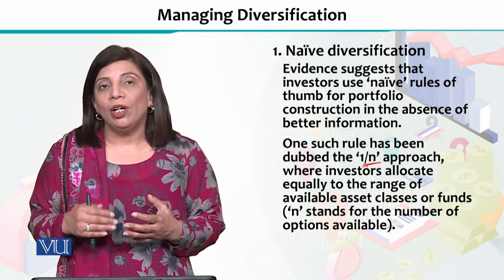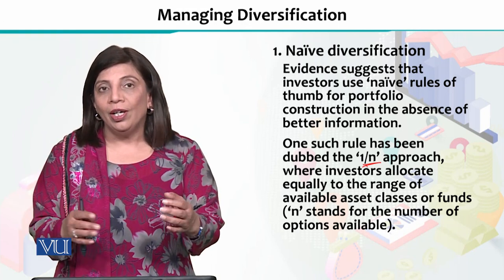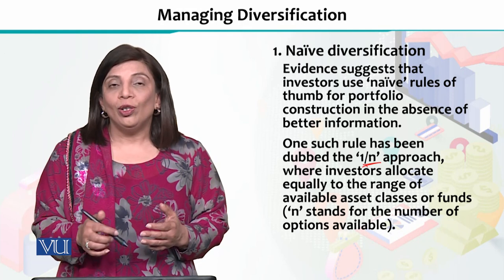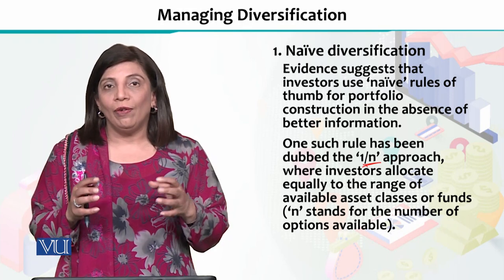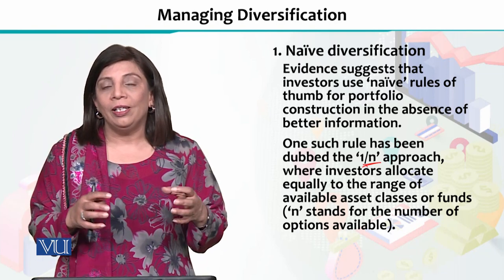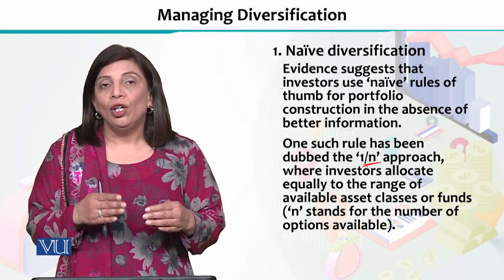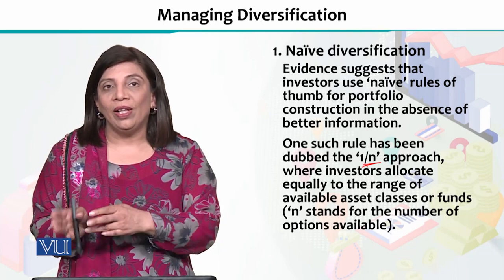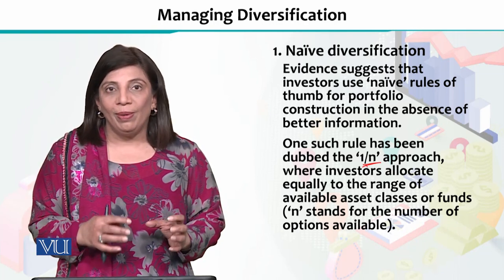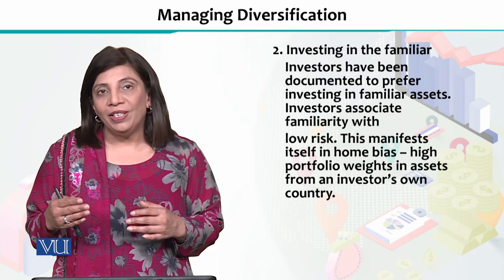So if an investor has N different types of investment opportunities in front of him, he will split his money equally across all N options. For example, if he wants to invest in three types of investments, he will put an equal share into each one. This is one way of doing diversification according to behavioural finance.